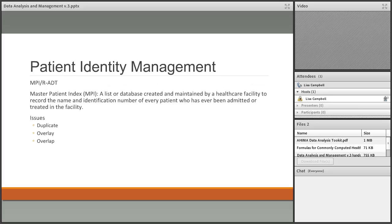Patient identity management refers to how we identify a patient — through the Master Patient Index (MPI), also now called RADT: Registration, Admission, Discharge, and Transfer. The MPI records the name and medical record number of every patient admitted. It is the original and most important index in any organization — used to find whether a patient has been there before, their dates of service, and discharge information.